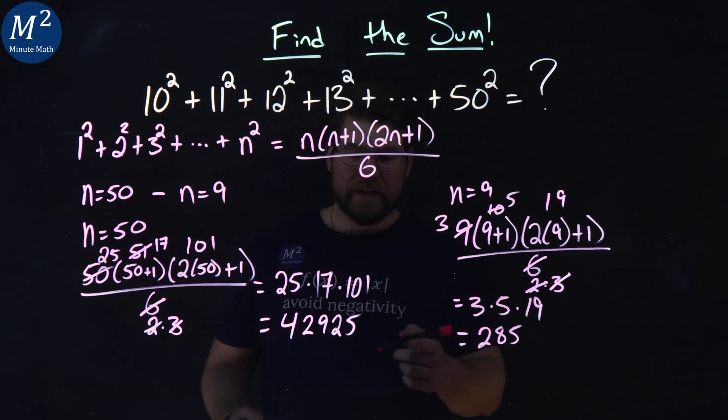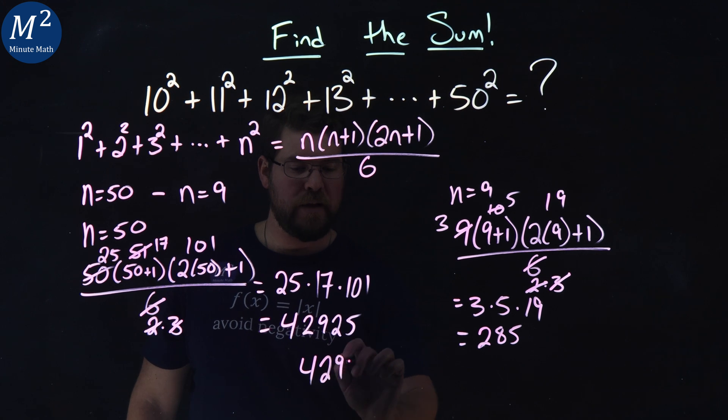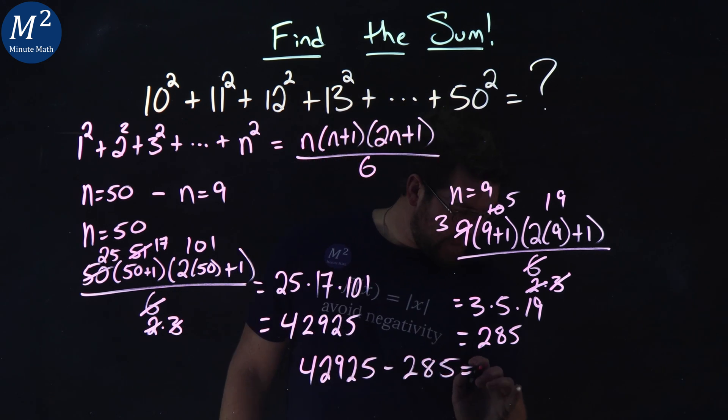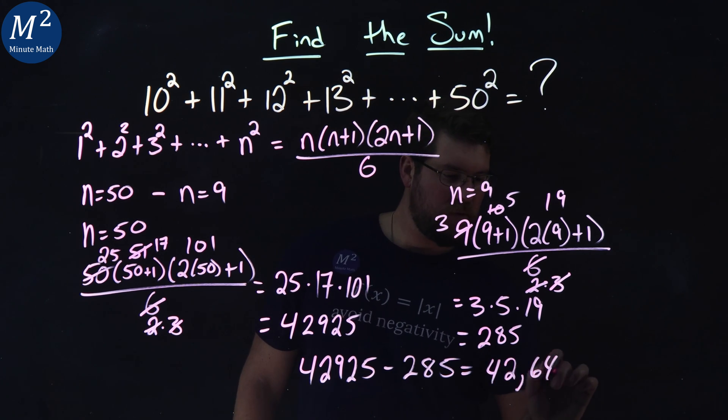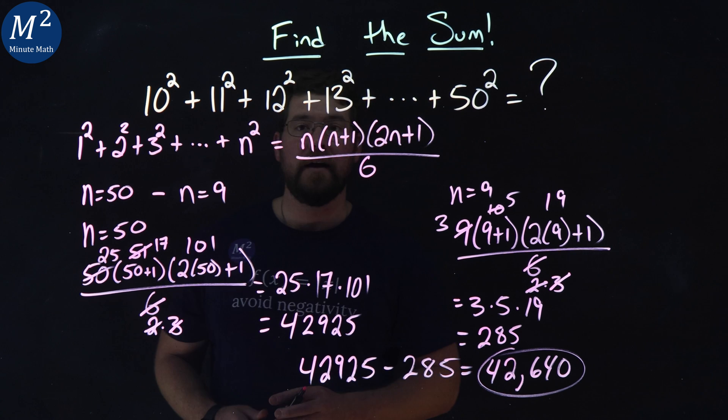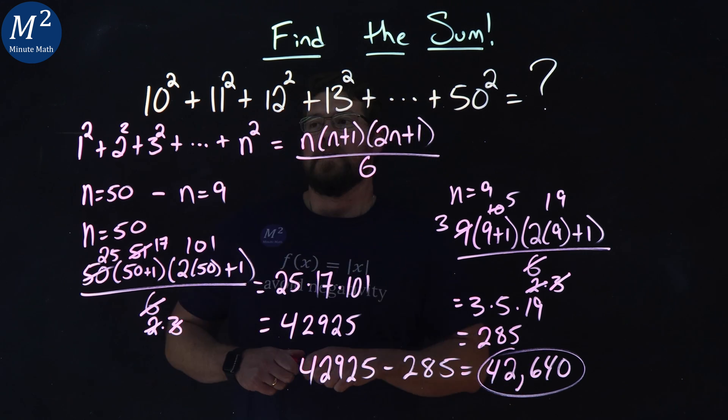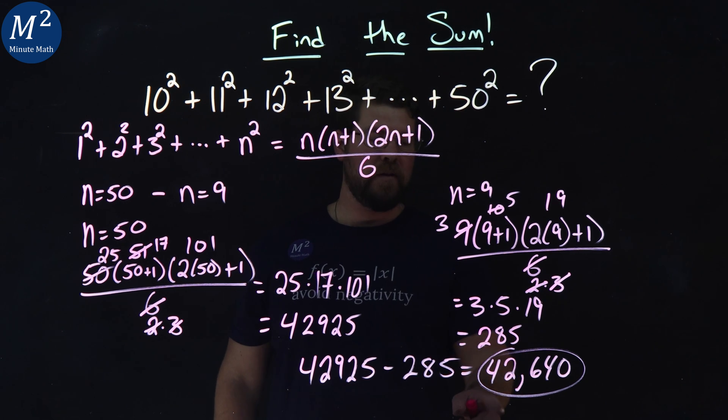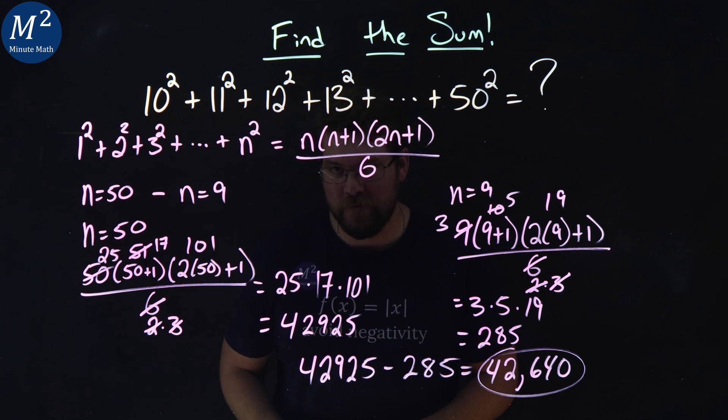We subtract these two numbers now. 42925 minus 285. And we get 42640. And there's our answer. 10 squared plus 11 squared plus 12 squared all the way to 50 squared is 42,640.